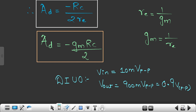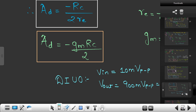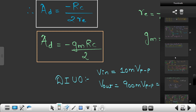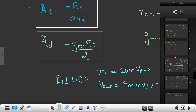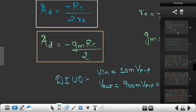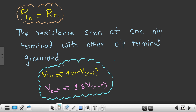Now if you remember, when we were dealing with dual input balanced output, we got an output signal of around 1.8 volts peak to peak. We provided the input signal of around 10 millivolts peak to peak, and at the output side we got 1.8 volts peak to peak.